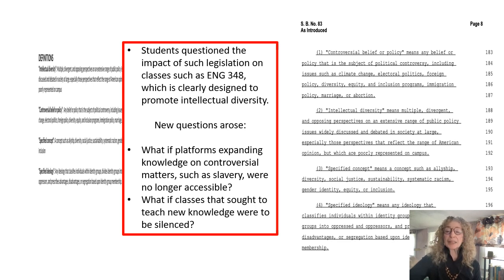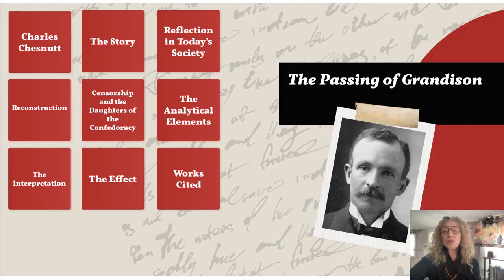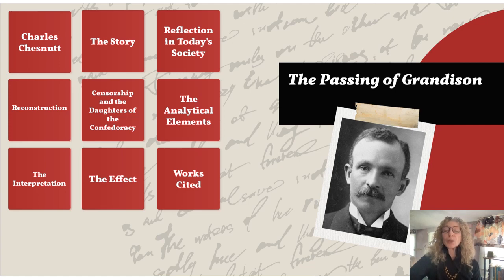They questioned the impact of such legislation on classes like English 348, which was clearly designed to promote intellectual diversity. Now there were new questions: What if platforms expanding knowledge on controversial matters such as slavery were no longer accessible? What if classes that sought to teach such new knowledge were silenced? All the students recognized the threat that such legislation would pose to curriculum that wanted to include writers such as Charles Chesnutt, who used satire to engender his moral revolution. Three students were selected to undertake a research-based multimodal project that focused on Chesnutt's story, 'The Passing of Grandison.'